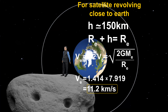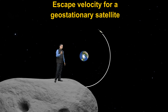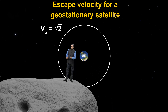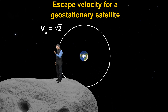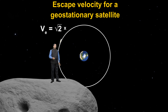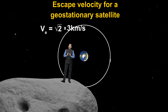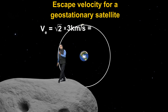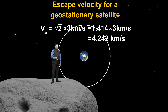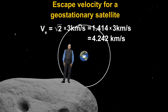Now let us also talk about the escape velocity of a geostationary satellite. The escape velocity of any satellite equals root 2 times its orbital velocity. The orbital velocity of a geostationary satellite is approximately 3 km/s. So the escape velocity of a geostationary satellite equals root 2 × 3 km/s = 1.414 × 3 = 4.242 kilometers per second.